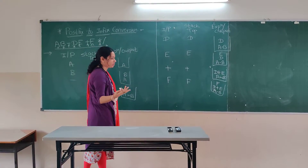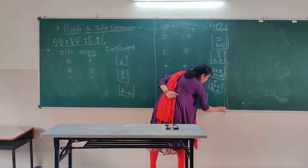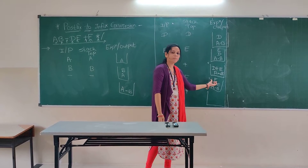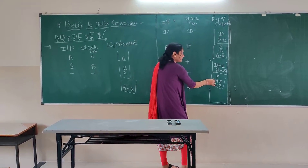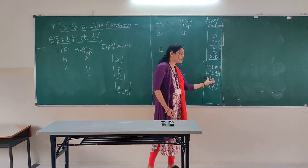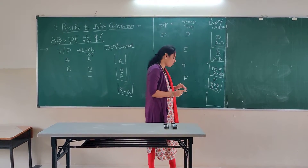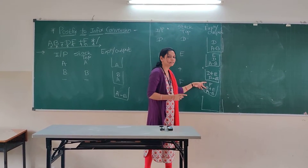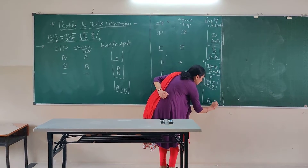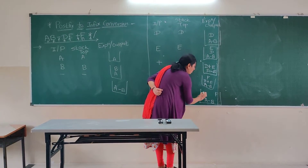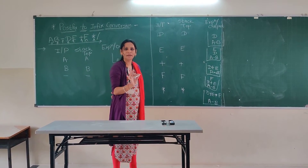Next is again an operator, the star. So we have to pop elements. You might wonder — we seem to have only one operand. But each entry on the stack is a single entity: A minus B is one entity, D plus E is one entity, and F is one entity. The top of the stack is F. Popping F, the next element is D plus E. We pop both and place the star operator between them, giving D plus E star F. The stack now contains A minus B and D plus E star F.